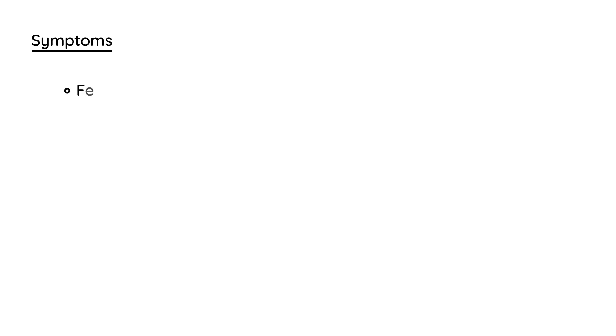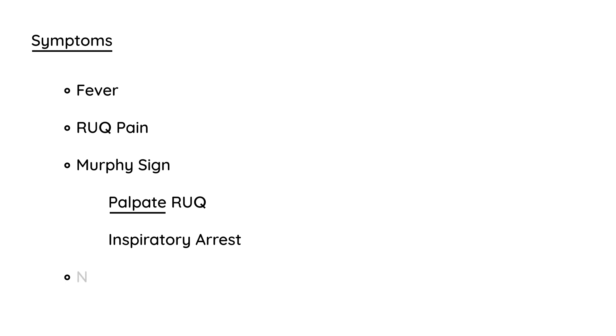Symptoms are not incredibly specific but can help. There is right upper quadrant pain, which at least localizes the area to identify the relevant organs. One specific and very helpful sign is Murphy's sign: inspiratory arrest on palpation of the right upper quadrant, meaning the patient halts their inspiration when you palpate that area. Other non-specific symptoms include nausea and vomiting.